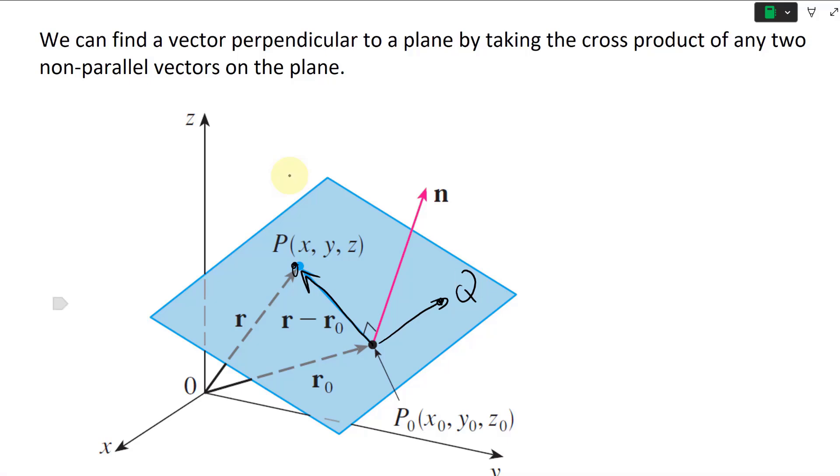So then all you need to do is first get the position vectors. If this is P₀, this is going to be P₀Q, and this is going to be P₀P, like that, and you just take the cross product of it, and you'll solve it.